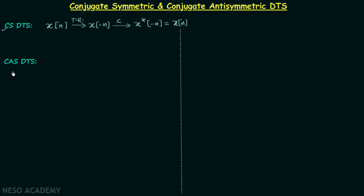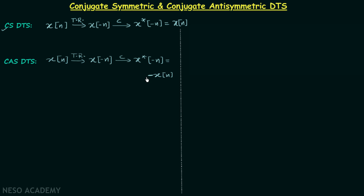Now let's look at conjugate anti-symmetric discrete time signals. In this case, after performing the same two operations — time reversal and conjugation — if the obtained signal x*(-n) equals negative of the original signal xn, then xn is conjugate anti-symmetric. So the condition is: after time reversal and conjugation, if you get the amplitude-reversed initial signal, the signal is conjugate anti-symmetric.